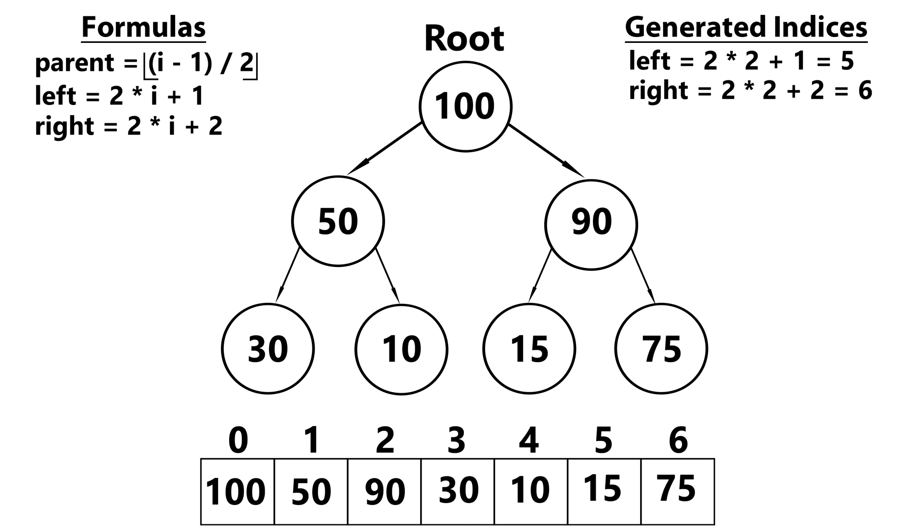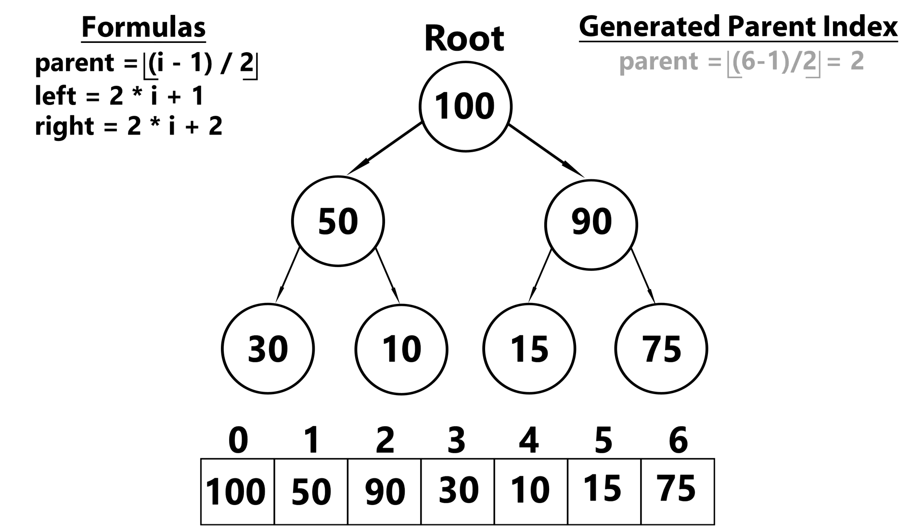All right, so let's try to use the formula for a parent. So let's take a look at 75. 75 is at index six. So we plug it into the formula and we get 2.5, which is rounded down to two. And you can see that its parent is indeed at index two. Doing one more example, let's say I want to take a look at 30. 30 is at index three. So we plug that into our formula for a parent and we get index one. And if we were to take a look at index one, you can see that we get 50 as the parent of 30.